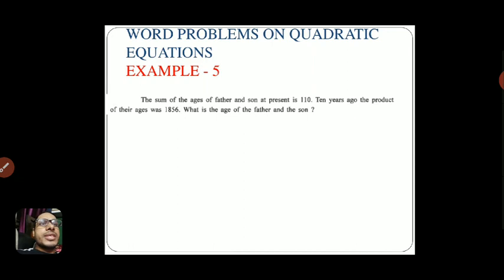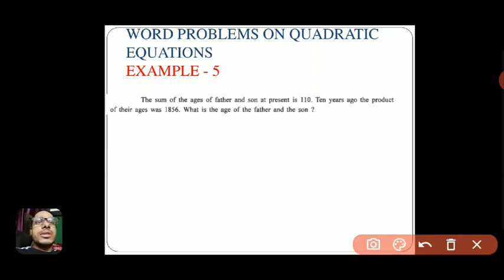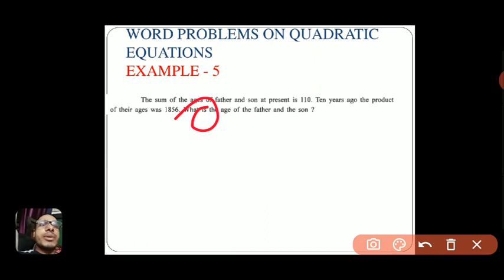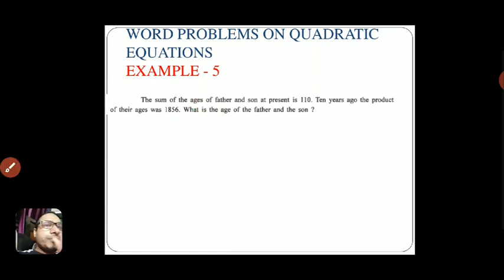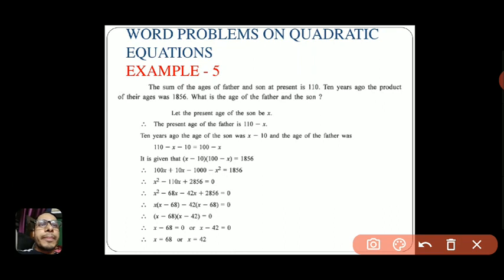Example five: the sum of the ages of father and son at present is 110. Ten years ago the product of their ages was 1856. Find the present ages of father and son. The word 'is' indicates present tense, so we need to understand the grammar — whether the question refers to present, past, or future.